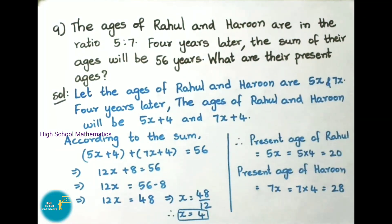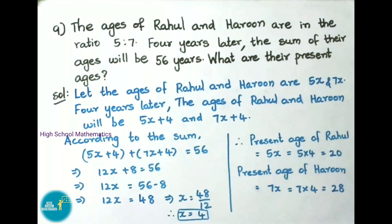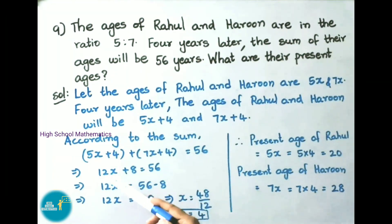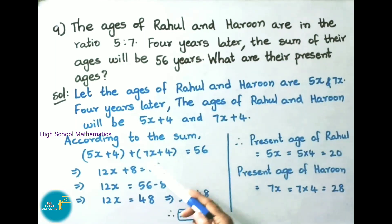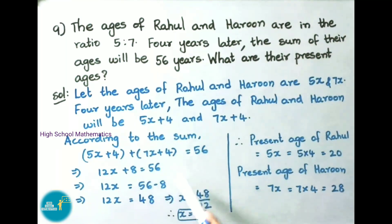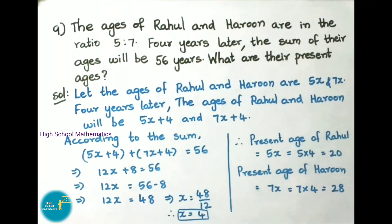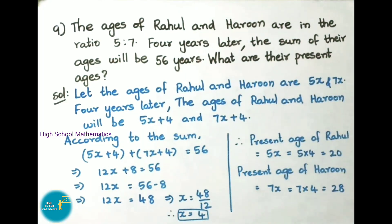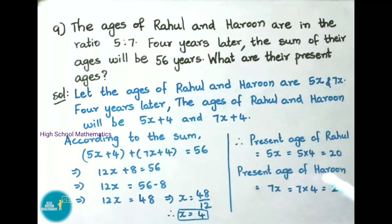According to the sum, the sum of the ages will be 56. That is 5x plus 4 plus 7x plus 4 equals to 56. That implies 12x plus 8 equals to 56. That implies 12x equals to 56 minus 8, which is 48. So x equals to 48 by 12. 12 times 4 is 48, therefore x equals to 4. Therefore present age of Rahul is 5x, that is 5 into 4, which is 20 years. Present age of Harul is 7x, that is 7 into 4, which is 28 years.